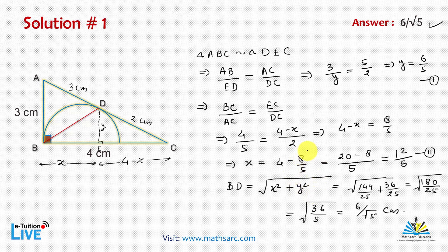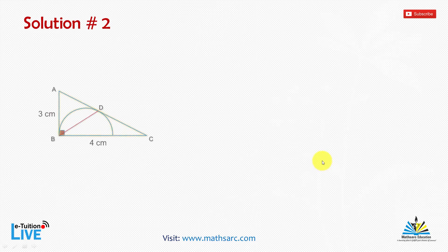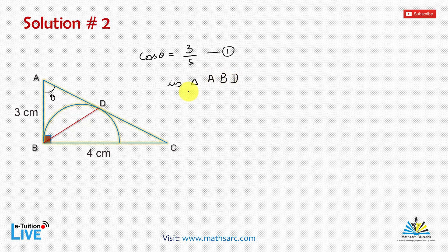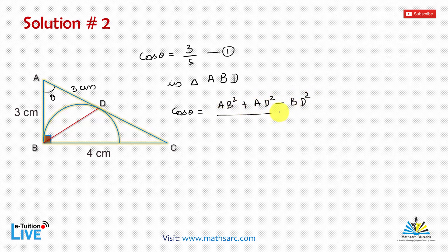Let's have another solution — solution number two, which is a bit more advanced. Let this angle be theta, so cos theta equals base upon hypotenuse, that is 3 by 5. In triangle ABD, AD equals 3 cm. We apply the cosine rule: cos theta equals AB squared plus AD squared minus BD squared upon 2 times AB times AD.